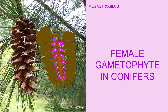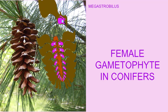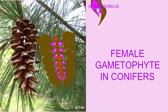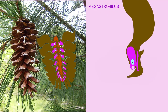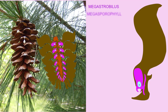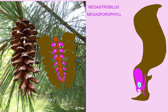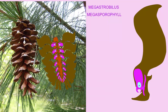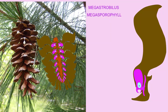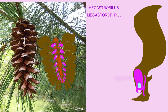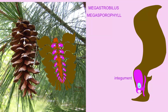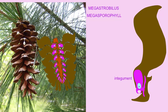Inside the female cone, or megastrobilus, there are specialized scale-like leaves known as megasporophylls, which will later become woody in consistency. Within them, the spore mother cell is surrounded by sporophyte tissue, the integument, which will later form part of the seed coat, and this entire structure is known as the ovule.